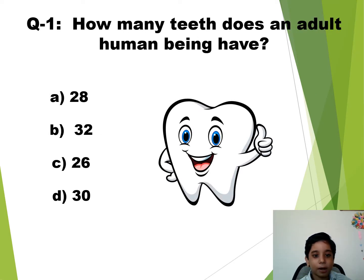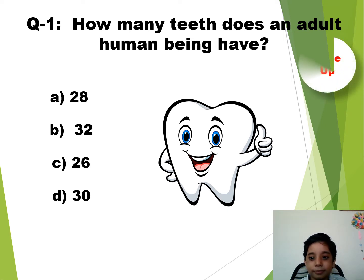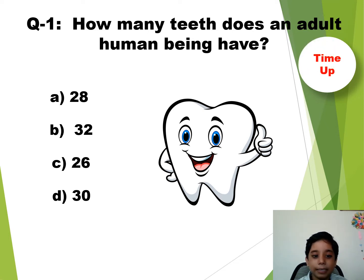Question number 1. How many teeth does an adult human being have? The time starts now. Time up. So the answer is B — 32.